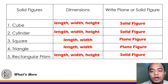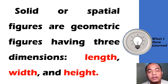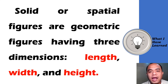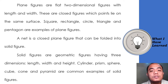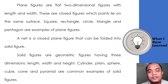Let us all read the What I Have Learned part of the module together. Solid or spatial figures are geometric figures having three dimensions: length, width, and height. Plane figures are flat, two-dimensional figures with length and width — closed figures whose points lie on the same surface. Square, rectangle, circle, triangle, and pentagon are examples of plane figures. A net is a closed plane figure that can be folded into a solid figure. Cylinder, prism, sphere, cube, cone, and pyramid are common examples of solid figures.